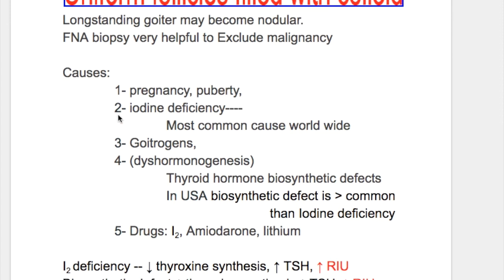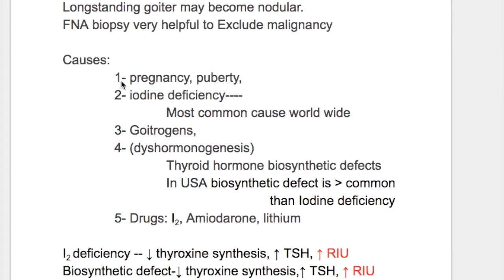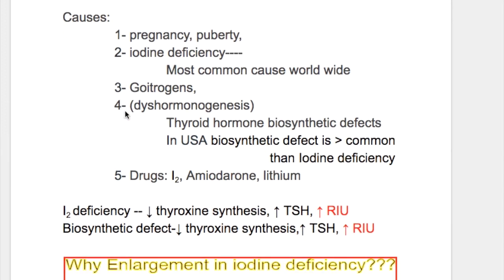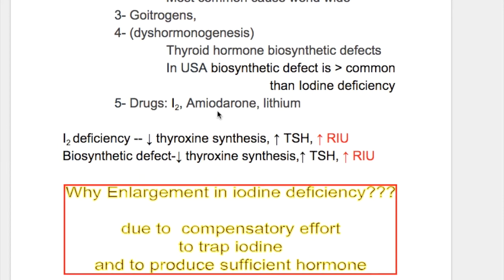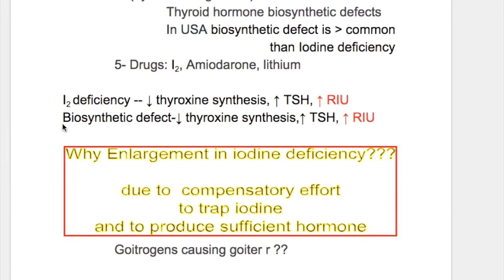The causes of diffuse non-toxic goiter are: number one, increased demand — physiologic, as in pregnancy and puberty; number two, decreased supply — iodine deficiency, which is the most common cause worldwide but not in the United States; number three, goitrogens; number four, dishormonogenesis — a thyroid hormone biosynthetic defect at any step from iodide trapping to iodination to coupling; and number five, drugs — iodine, amiodarone, and lithium.